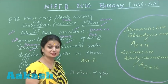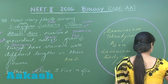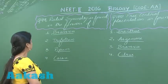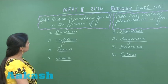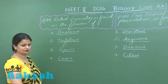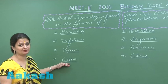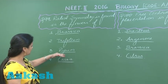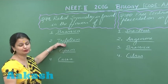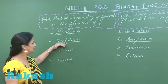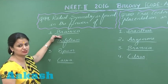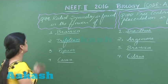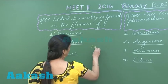Question number 99: Radial symmetry is found in the flowers of which plant? Caesalpinia belongs to the Caesalpiniaceae family and has bilateral symmetry. Pisum and Trifolium belong to the Fabaceae family — again bilateral symmetry. Brassica, belonging to Brassicaceae, has radial symmetry. So the right answer is option number one.